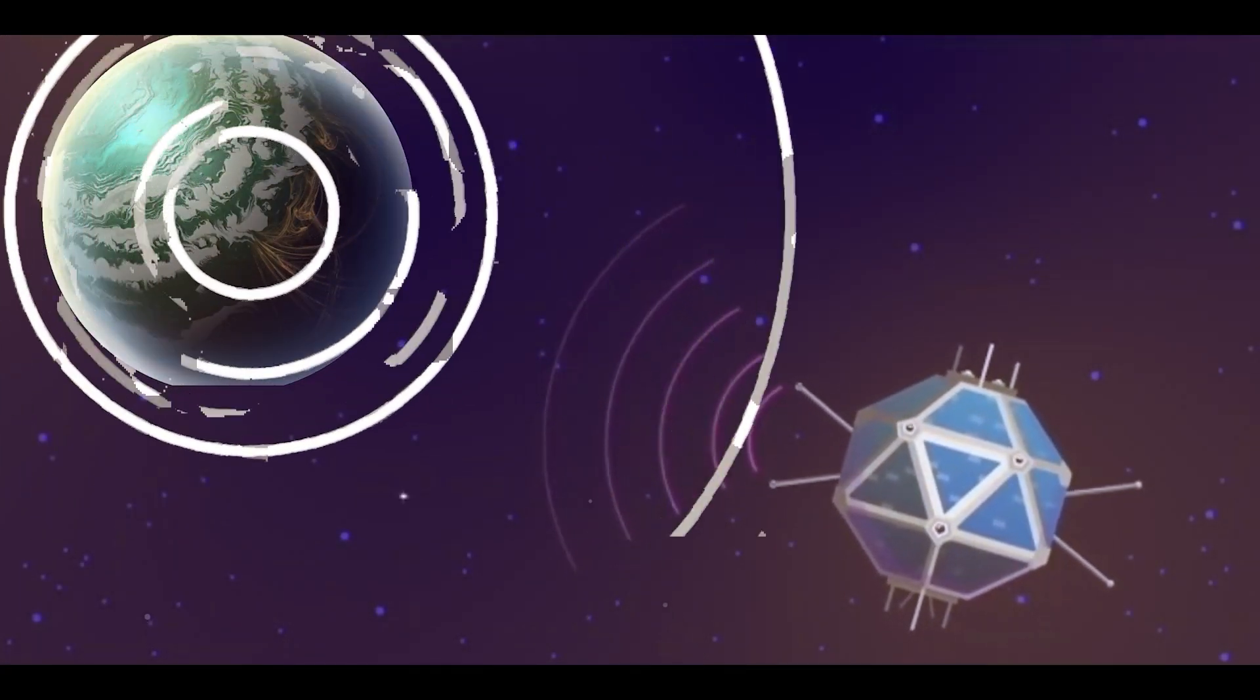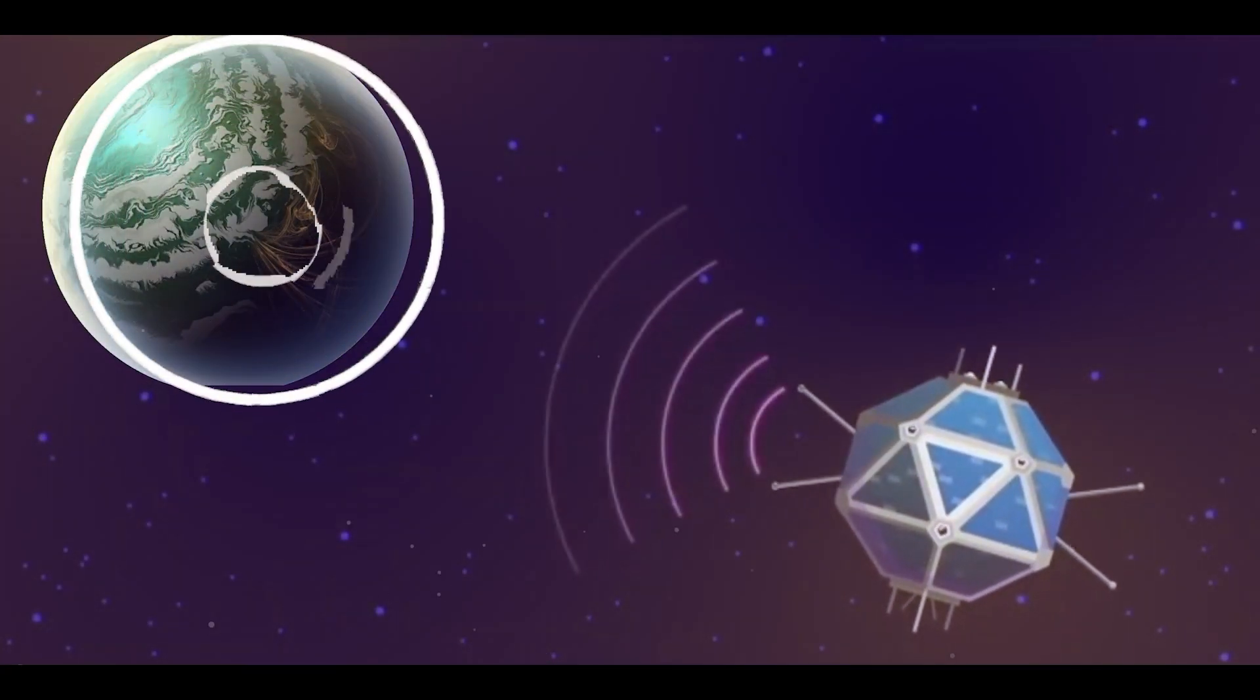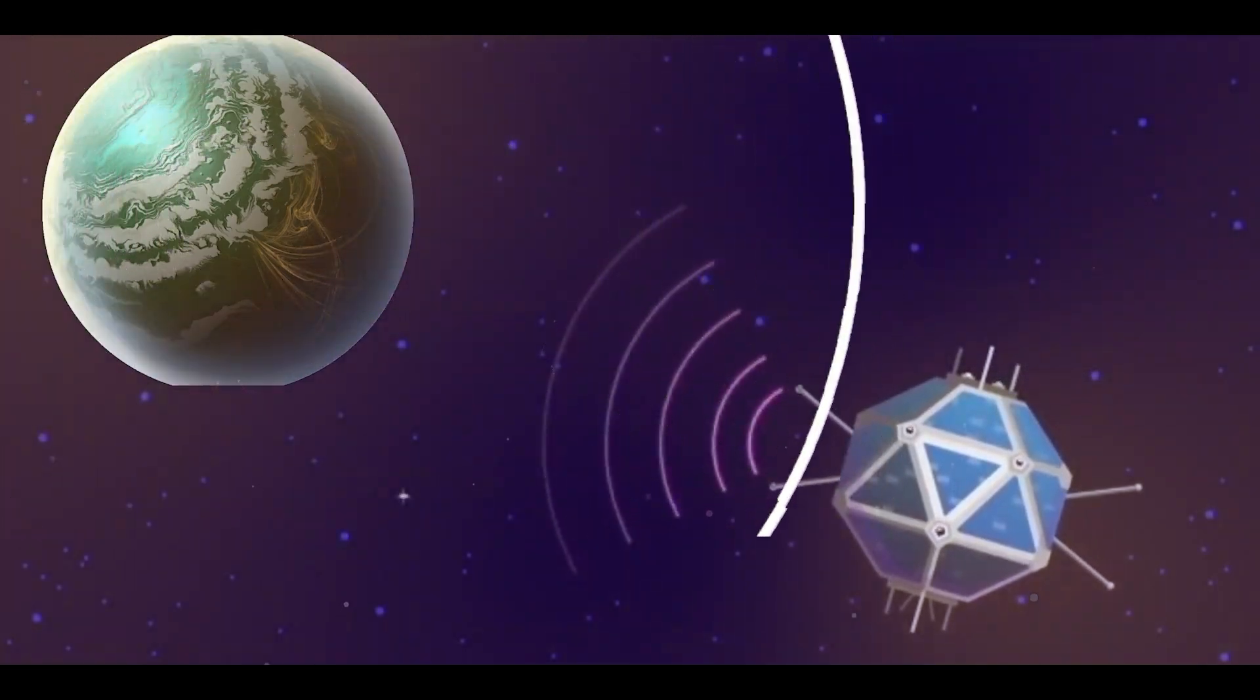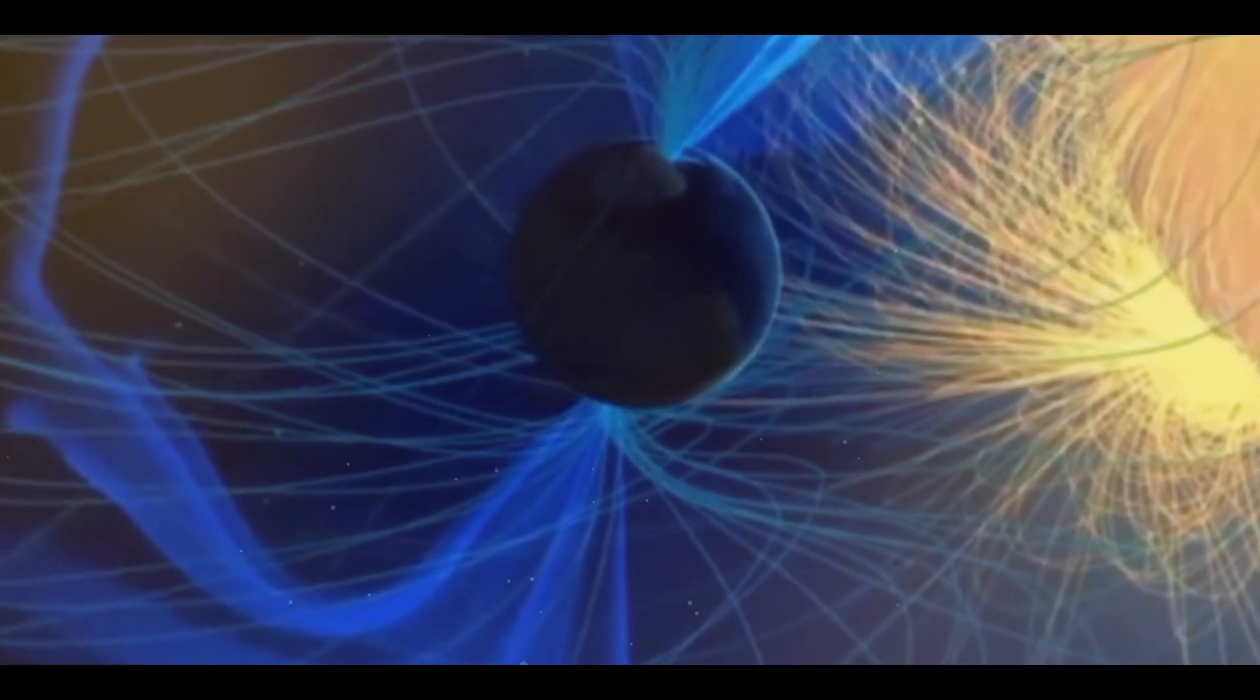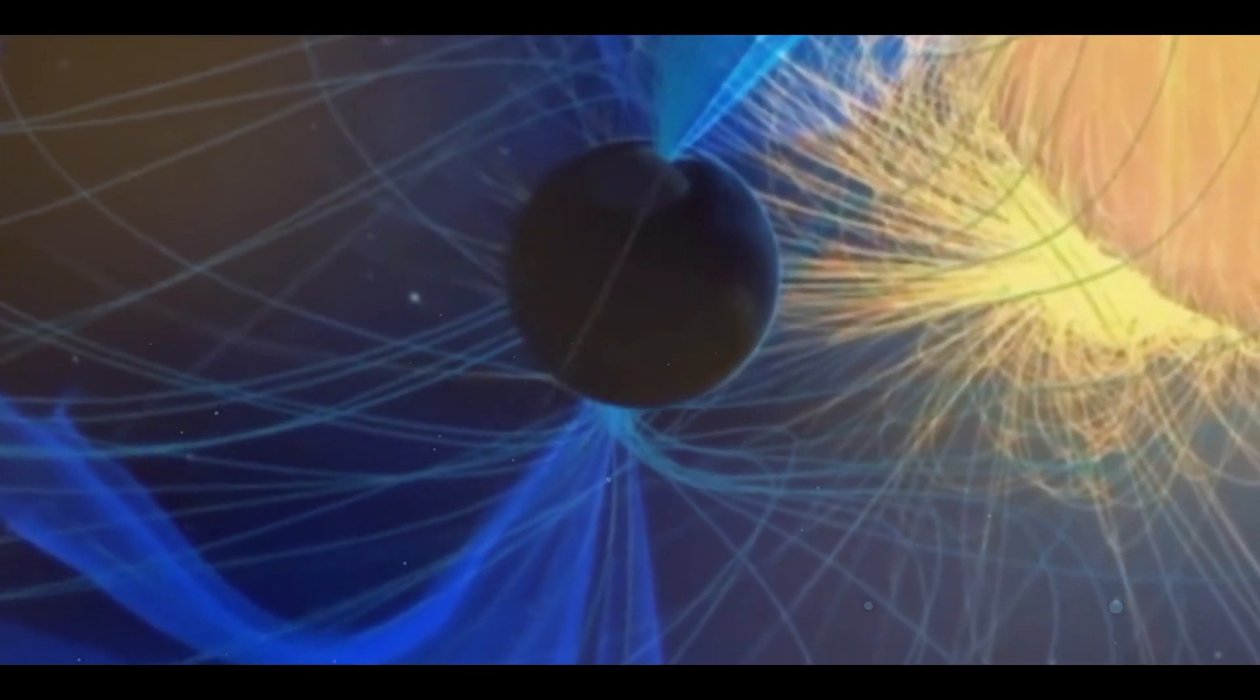Scientists have detected coherent radio signals emanating from an exoplanet in the past few years. The signals may indicate that there is a magnetic field on this distant world, according to researchers.